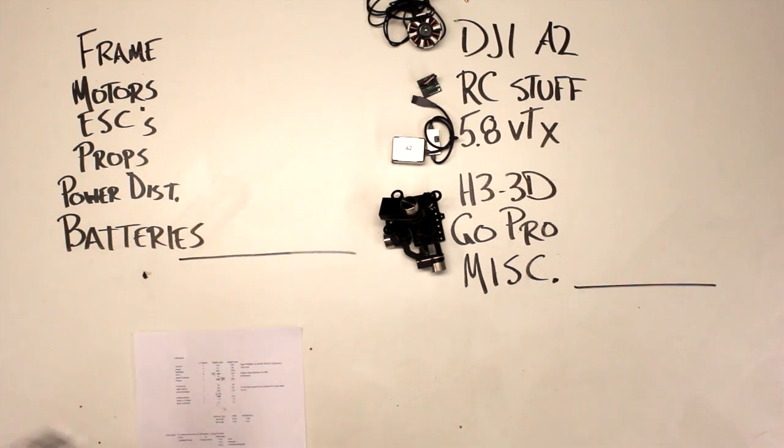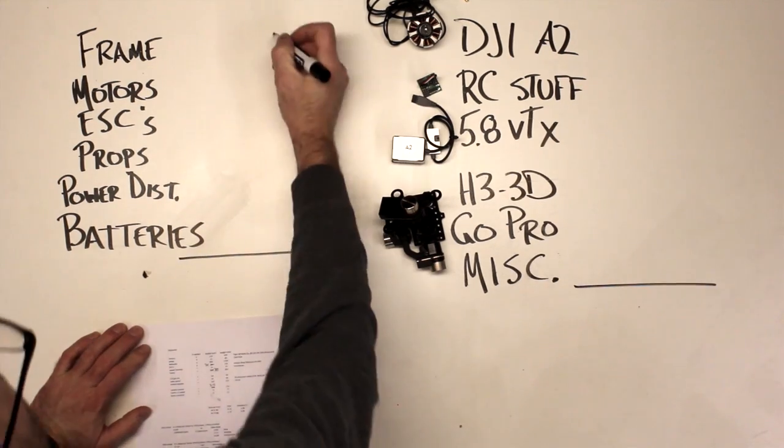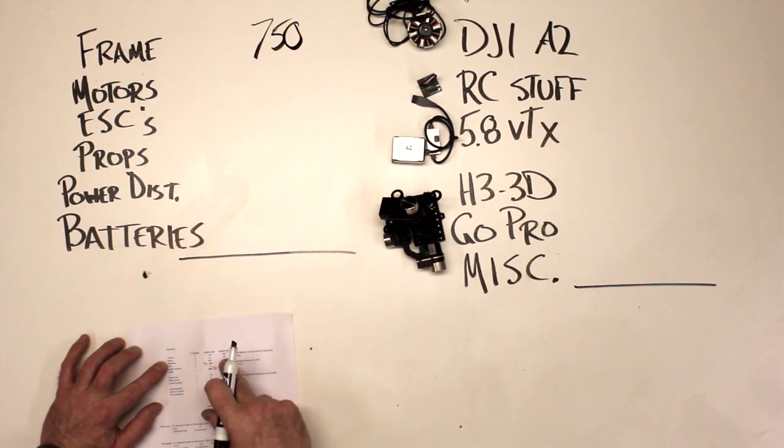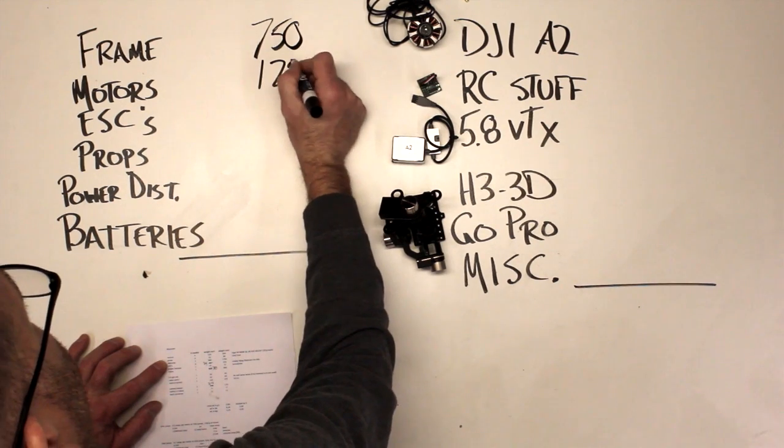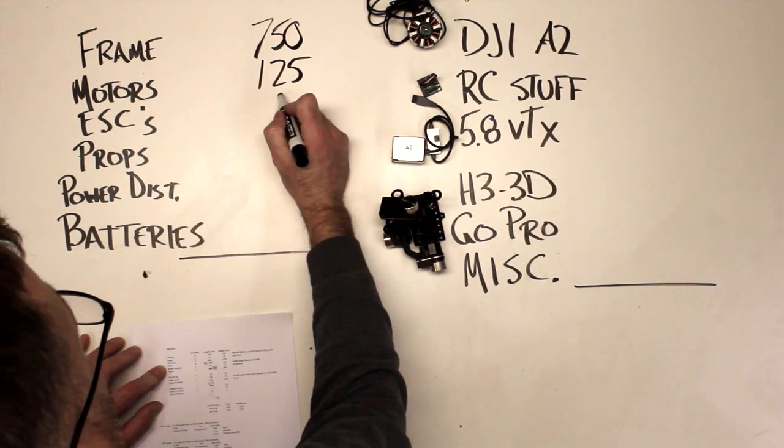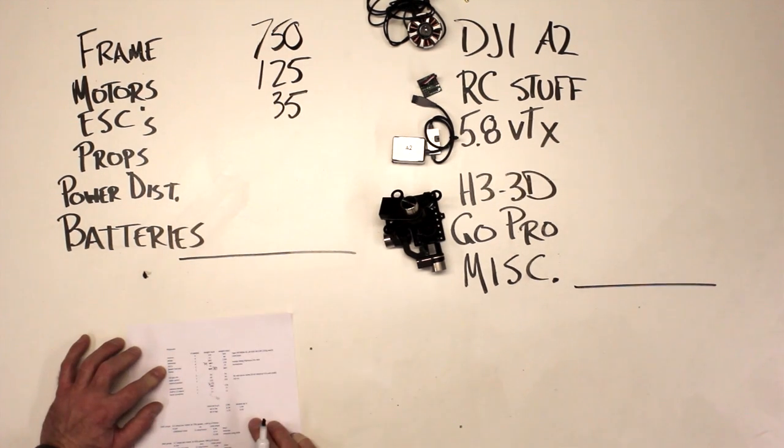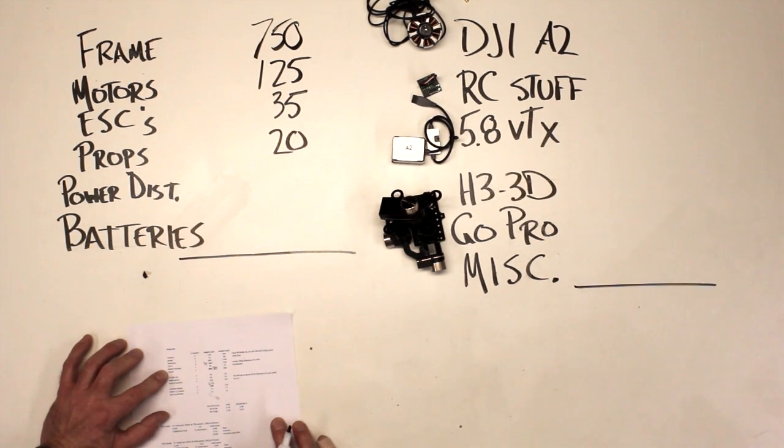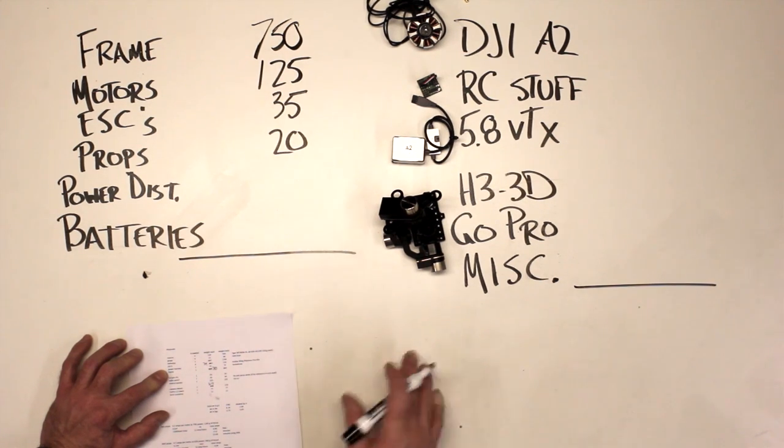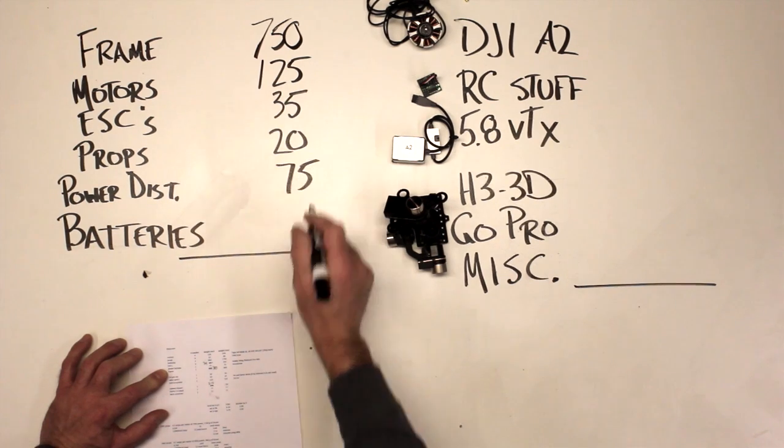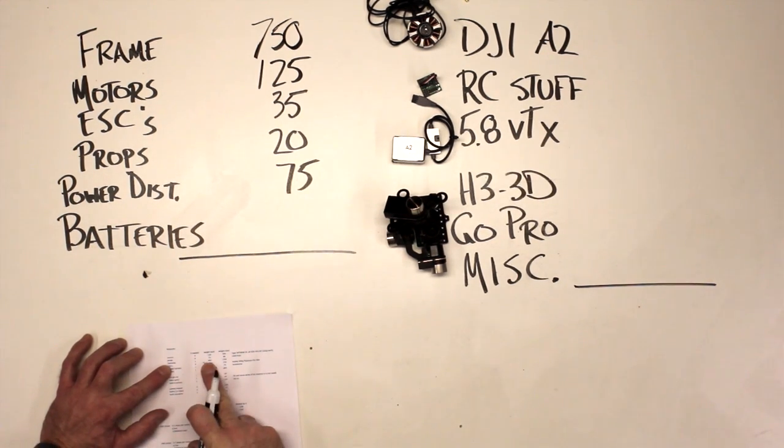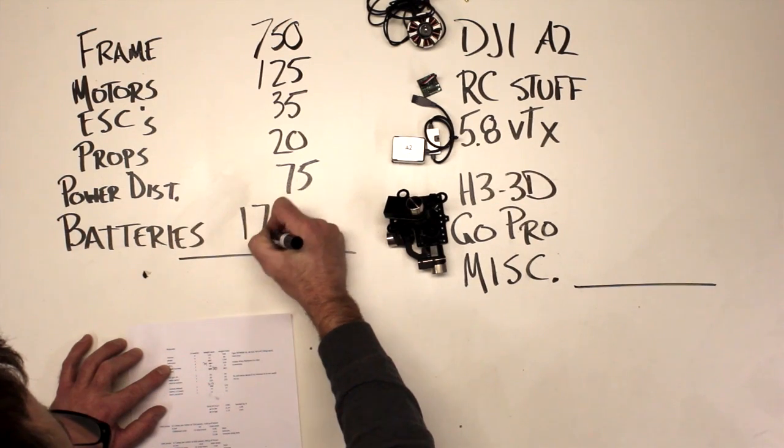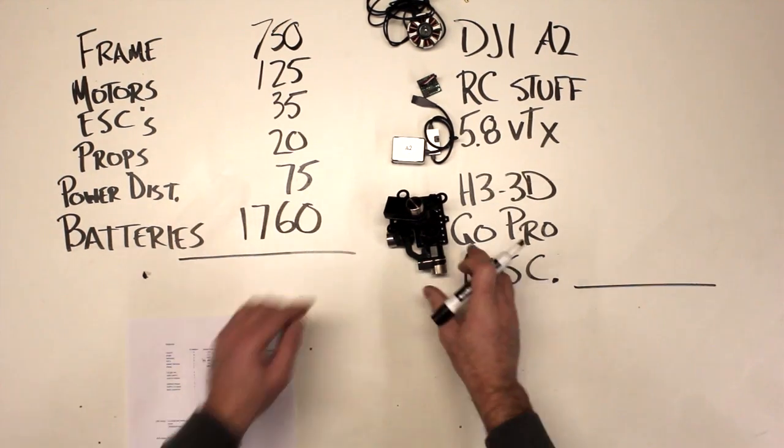So let's fill in the blanks here. I'm using one of my XY frames, and that's going to be about 750 grams. The motors, those motors are about 125 each. The ESCs are about 35 each, and the propellers, we'll call those 20. Power distribution is just going to be a harness with some wires. It's probably going to be about 75 grams. And the batteries, I know, are about 880 each. So that's 1,760 for two.